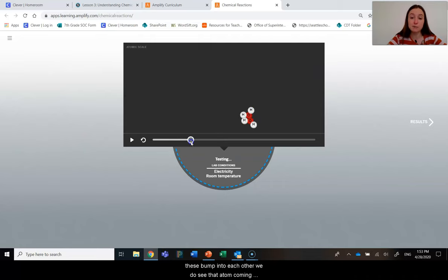And when these bumped into each other, we do see that atom coming off of the group. Actually, two atoms coming off. And here I see some recombination. So they reorganize, rearrange themselves in a new way. Interesting.